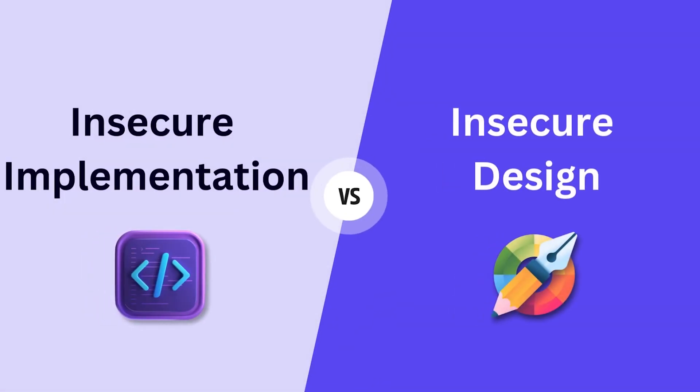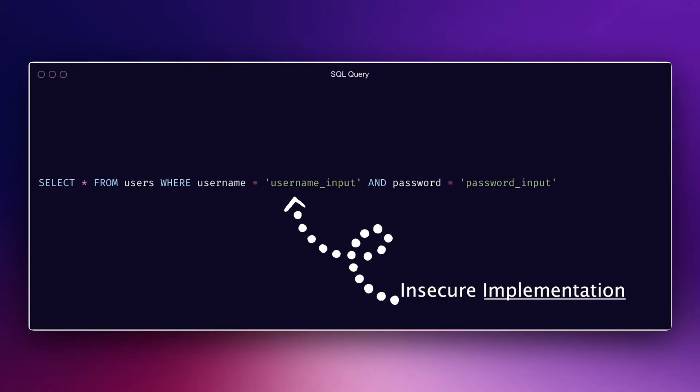Insecure design — what is it? Fundamentally, it's slightly different to most other vulnerabilities that we see, because other vulnerabilities really revolve around insecure implementation. For example, an injection vulnerability is the insecure implementation of taking user data and allowing it to interact with our different systems. We'll start off with business logic flaws — insecure design via business logic flaws.